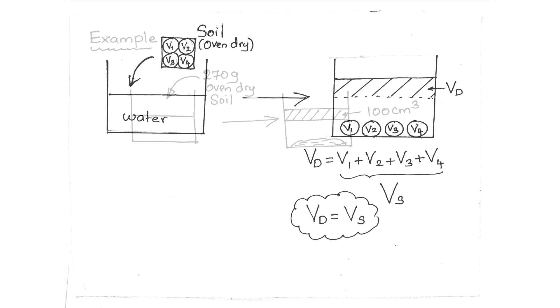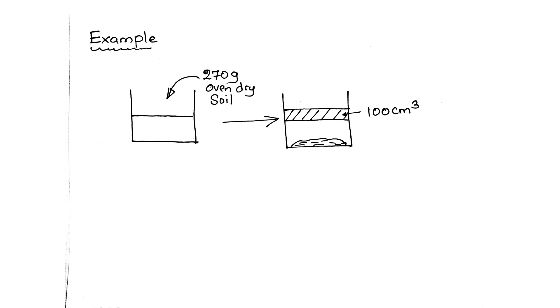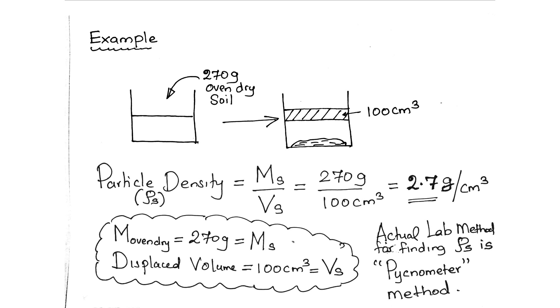Example: 270 g oven-dried soil put into the water and observe water displacement of 100 cm³. Particle density equals Ms over Vs, equals 270 g over 100 cm³, equals 2.7 g per cm³.